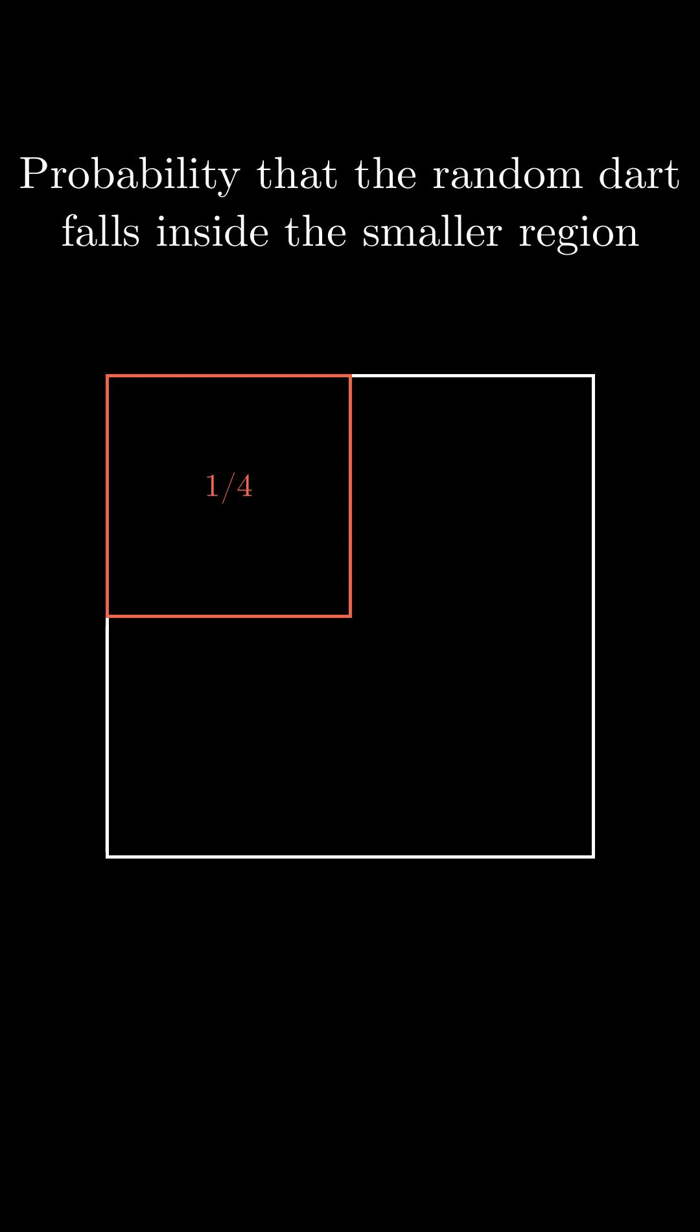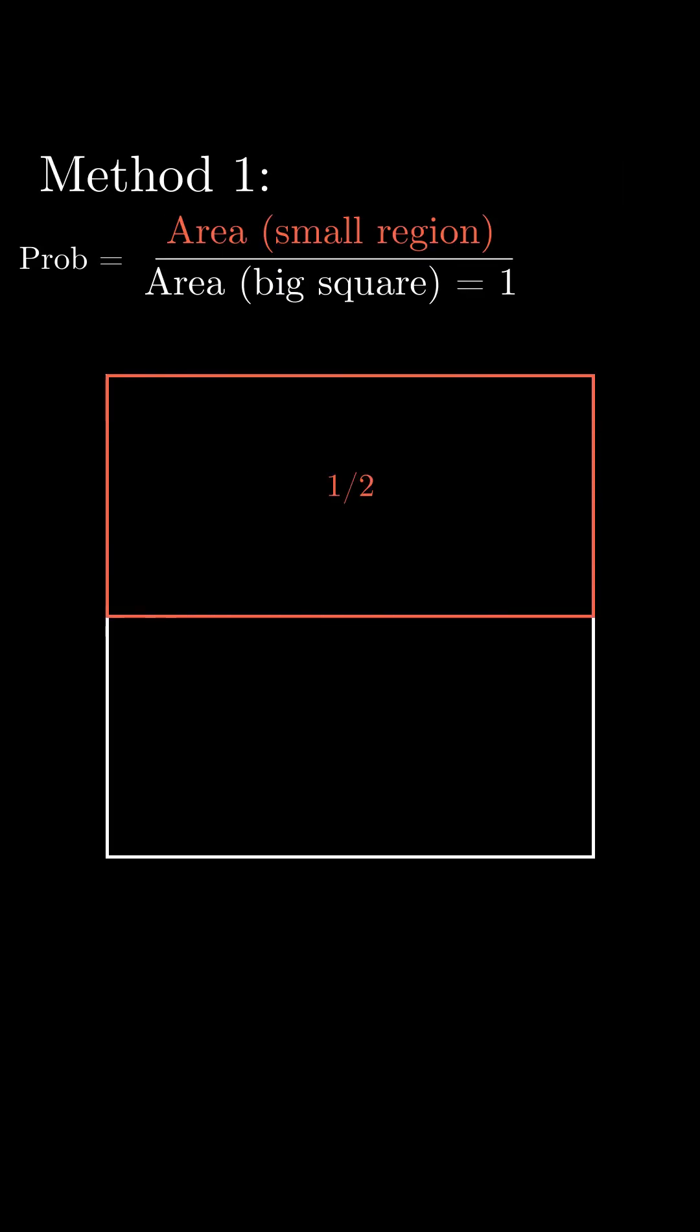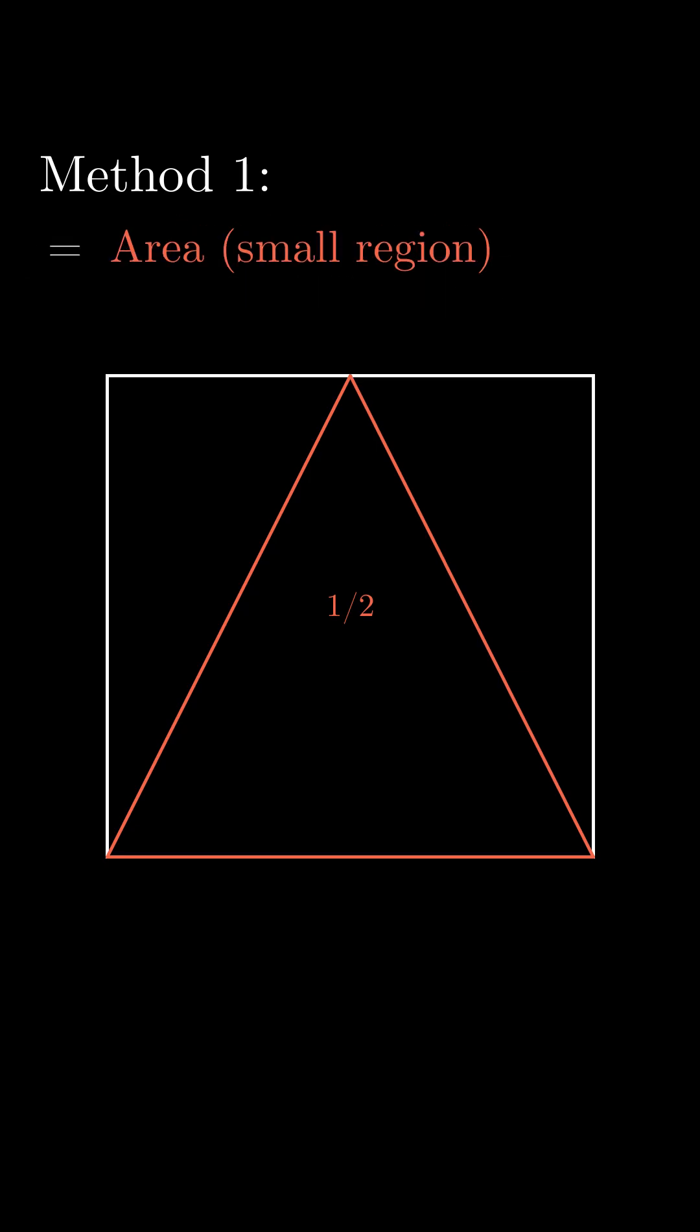In fact, this probability is simply the fraction of the area of the smaller region compared to the big square. The latter being one, in this case means this probability is simply the area of the smaller region.